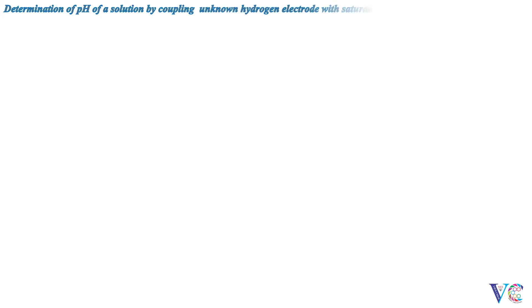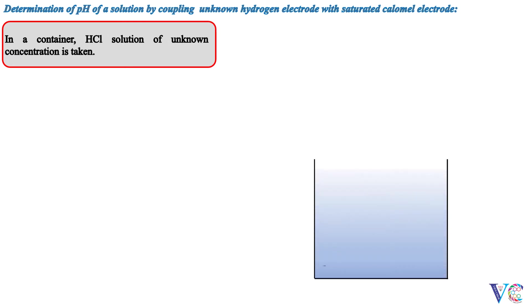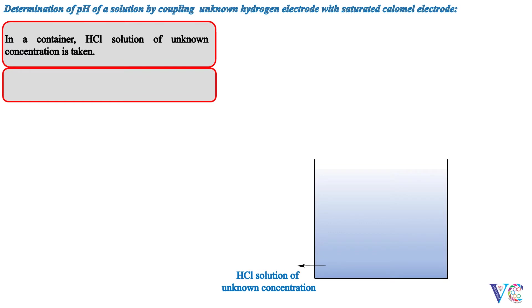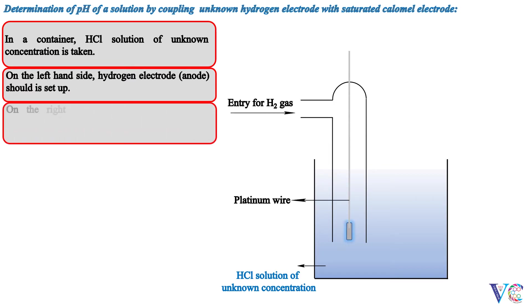Determination of pH of a solution by coupling an unknown hydrogen electrode with a saturated calomel electrode. In a container, HCl solution of unknown concentration is taken. On the left-hand side, hydrogen electrode (anode) is set up. On the right-hand side, saturated calomel electrode (cathode) is set up.